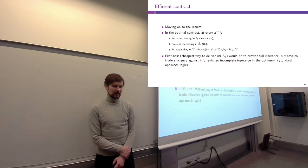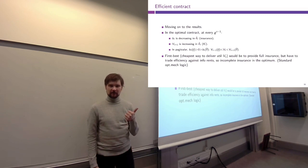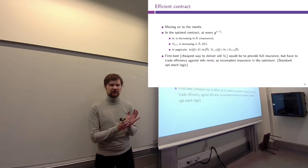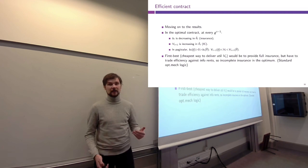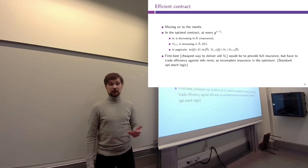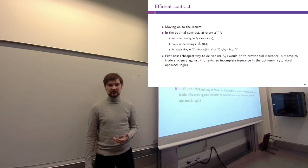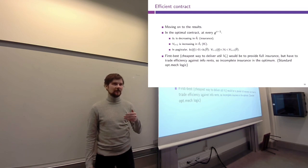Given that the agent is a self-interested utility maximizer, they would always ask the principal for the maximum amount of money, saying 'I got a very bad income shock, please give me money.' So this perfect insurance contract would not be incentive compatible. The main reason is that in every period we only have one instrument — we can only adjust transfers. We do not have access to any kind of allocations, whereas in standard models we can provide incentives by manipulating transfers conditional on selecting a given allocation.